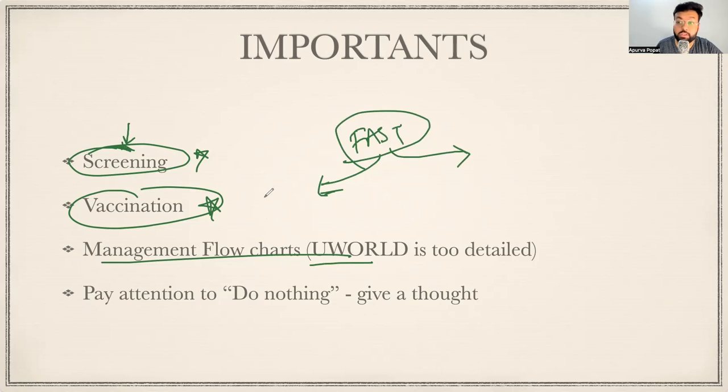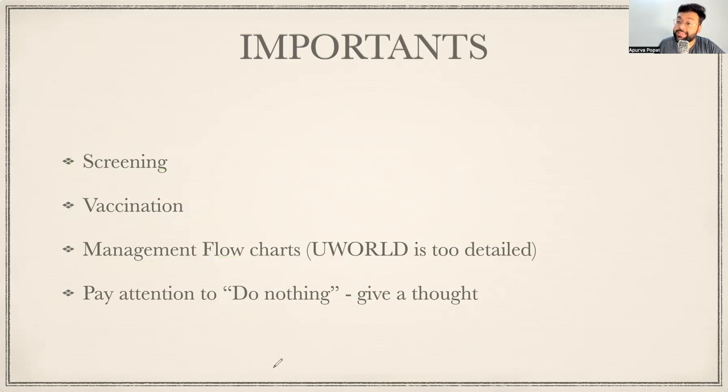Sometimes in the questions and the options, you'll also come across the option that do nothing. Do nothing, just sit. That may be or may not be the correct option. If at all you get do nothing options in whatever question you are practicing, do consider that. Give a thought: really, will I do anything? Is it just supportive care or maybe just anything viral? Pay attention to do nothing. Give a thought is vaccination really required, is intervention really required, and then choose intervention. Because sometimes doing nothing may be a better option.